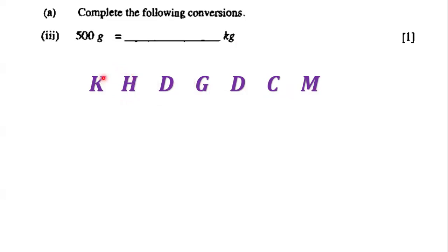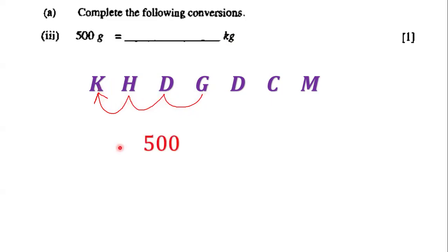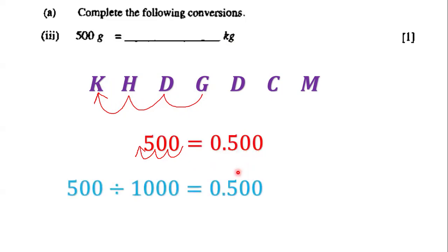We have to convert from grams to kilograms, so we start from G and end at K — moving three places: one, two, three. We have 500 and the decimal point moves three places to the left, giving us 0.500.